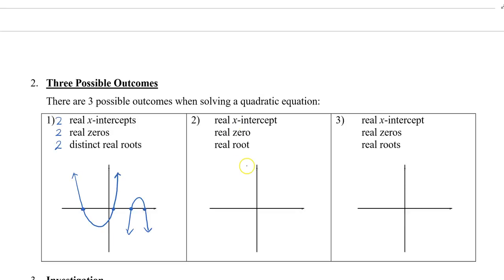Now what happens? How would we get one solution? Well, that occurs when the vertex of the parabola just touches right at the x-axis. So you can see here, there's one x-intercept, there's one real zero, and there's also then one root. So we can have the graph pointing up. Or we can also have the graph pointing down.